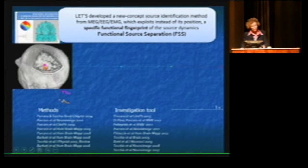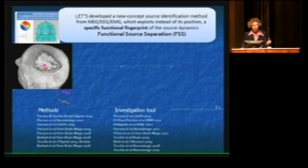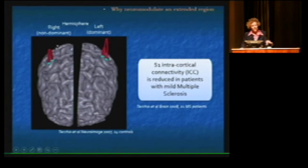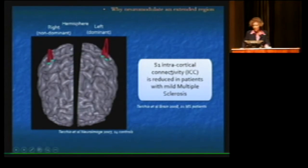We concluded in that paper that an alteration of the communication between the nodes — in particular involving primary motor and sensory areas — occurs much before a structural and even functional alteration of each node appears. Using a tool we developed over the last ten years, which lets us study the activity of specific regions identified on the basis of behavioral features rather than by resolving the high-dimensional inverse problem, we were able to observe that an index of intracortical connectivity within primary sensory areas that we observed in healthy people was altered in multiple sclerosis patients.